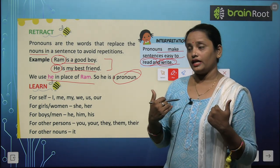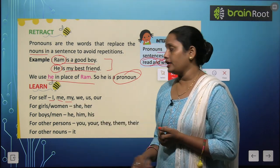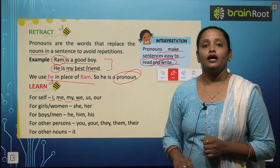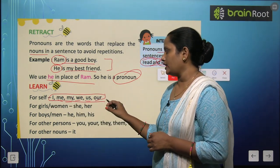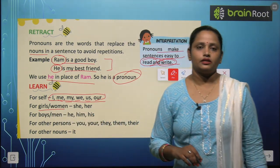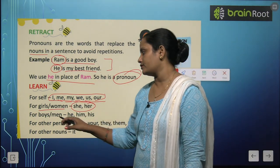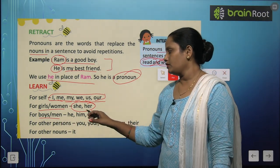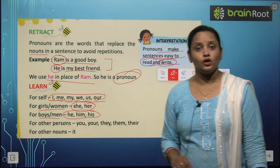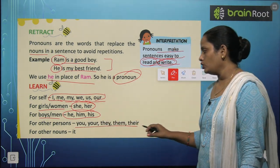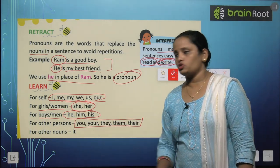Now, for self — for yourself, which words do we use? I, meaning 'मैं'; me; my; we; us; and our. So all these words we use for ourselves. For girls or women, which words do we use? She and her. For boys and men, what do we use? He, him, and his. For other persons — for other people, what do we use? You, your, they, them, and their. These are used for other people.